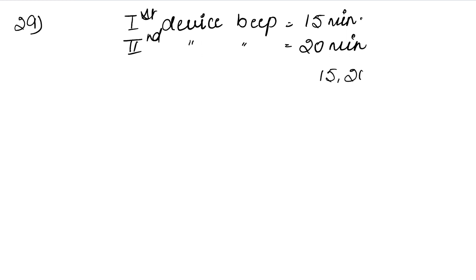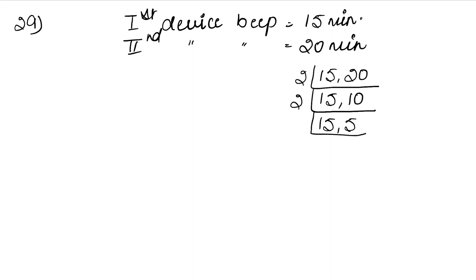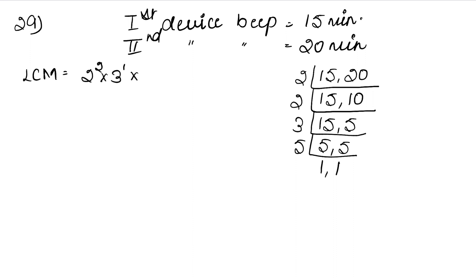So we find the LCM of 15 and 20. Dividing by 2: 15 as it is, 2×10=20. Again by 2: 15 as it is, 2×5=10. Dividing by 3: 3×5=15. Then by 5: 5×1=5, 5×1=5. So LCM = 2² × 3¹ × 5 = 4 × 3 × 5 = 60.